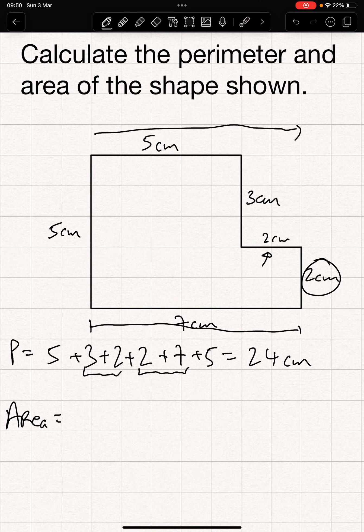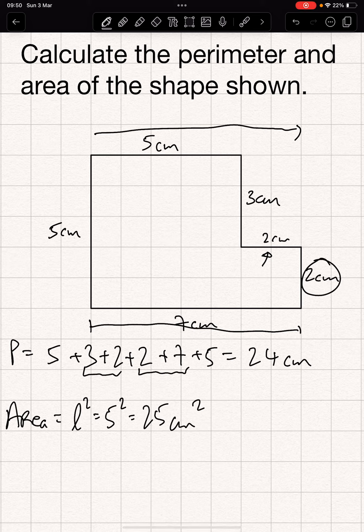It's the side squared for an area. So L squared, that's 5 squared, and that's 25 squared centimeters for the big box.